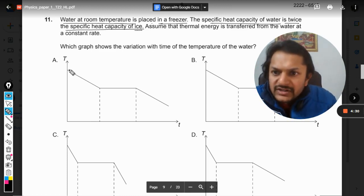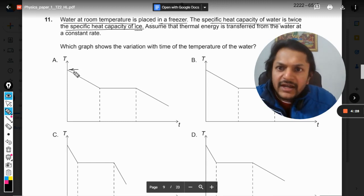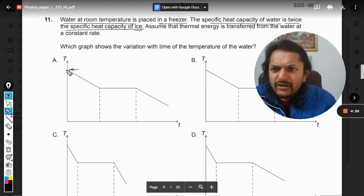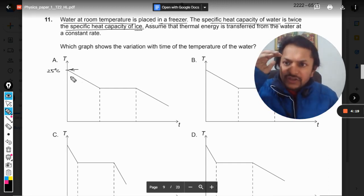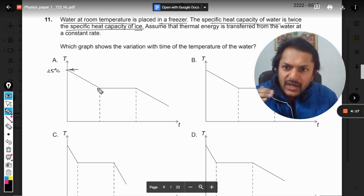So obviously this is the initial temperature. The initial temperature is not given, so whatever it is, let us say 25 degrees centigrade, just assuming. Obviously if it is in the freezer, now the temperature starts falling.